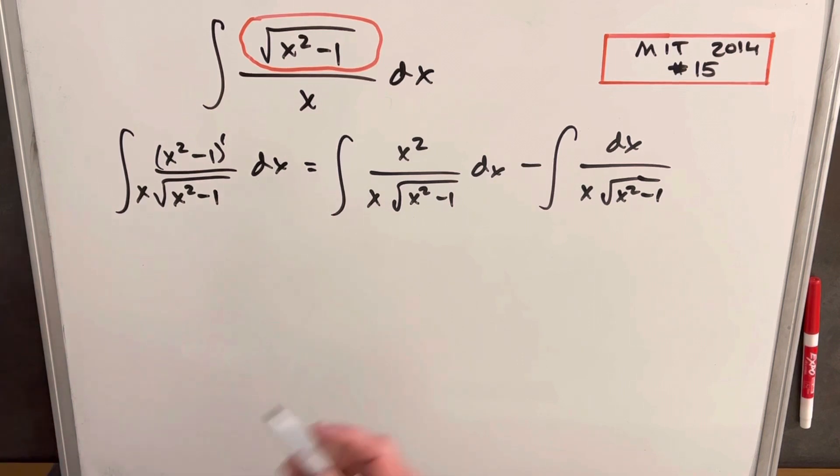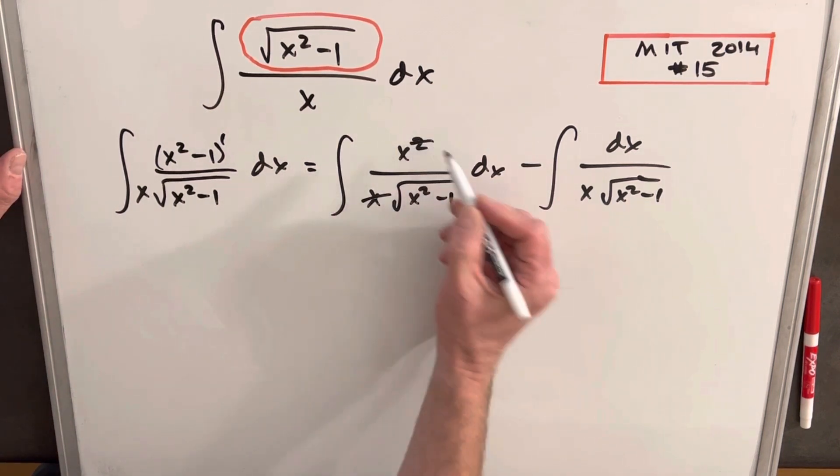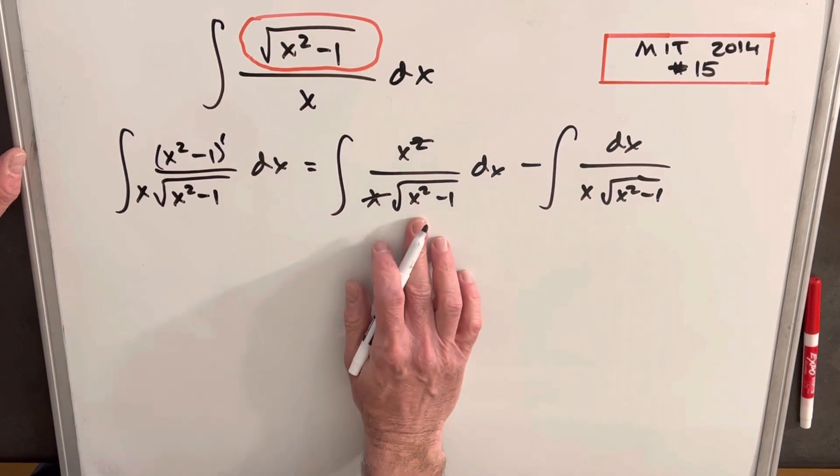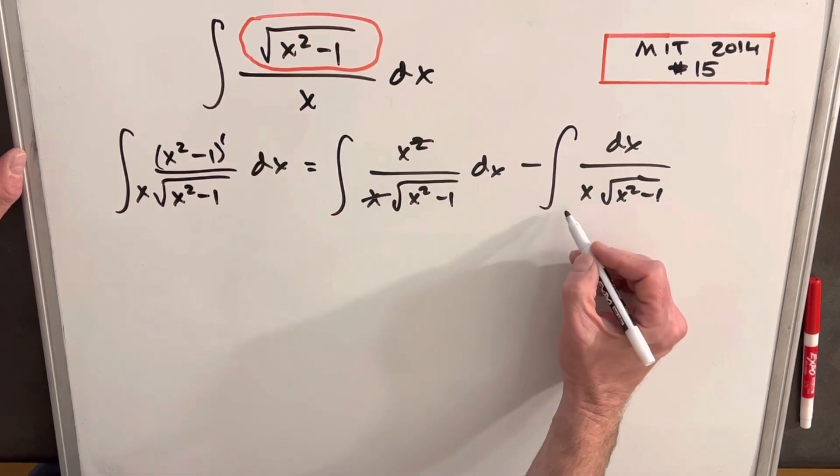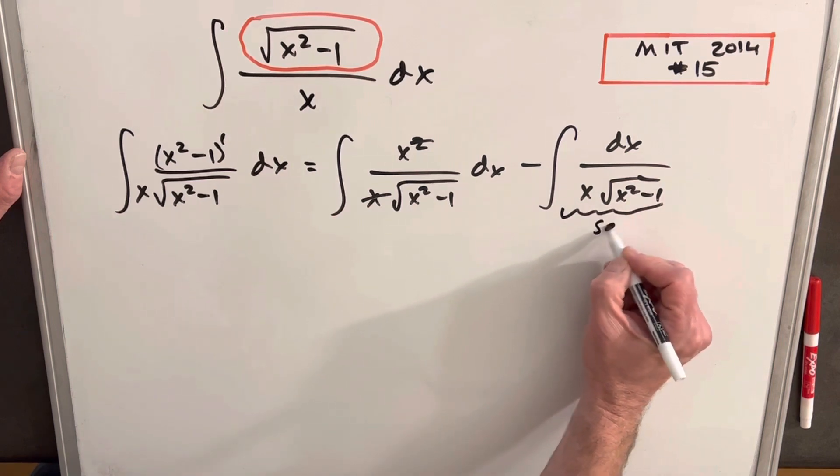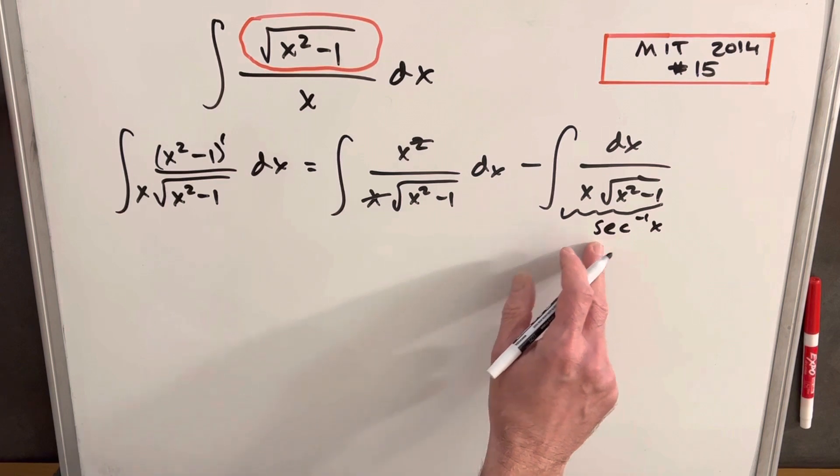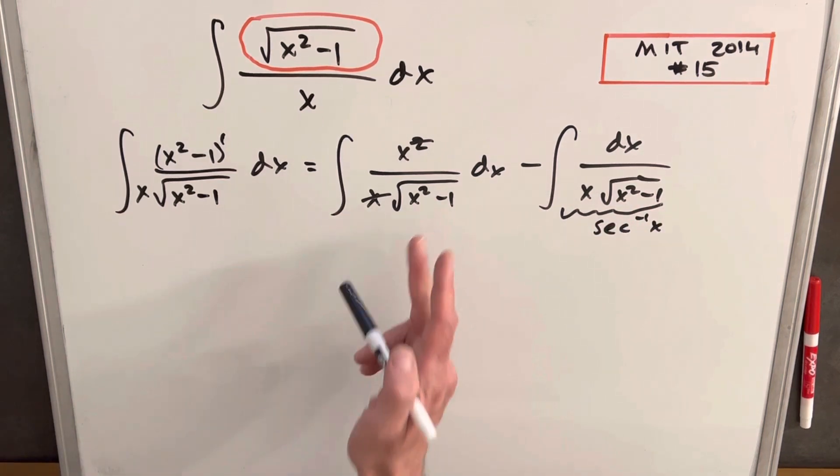And the beauty of this is we're going to get a cancellation here as we have x over x squared, so we can just cancel one of these out. And I think this is going to work with a u substitution. And this thing, we don't have to do anything with this, because this integral is actually just secant inverse of x. You could do the trig substitution, but it's a standard integral.